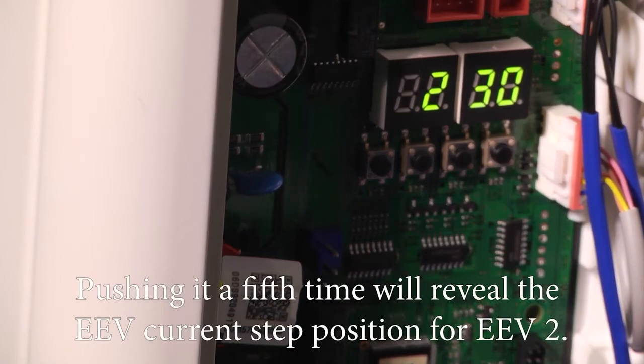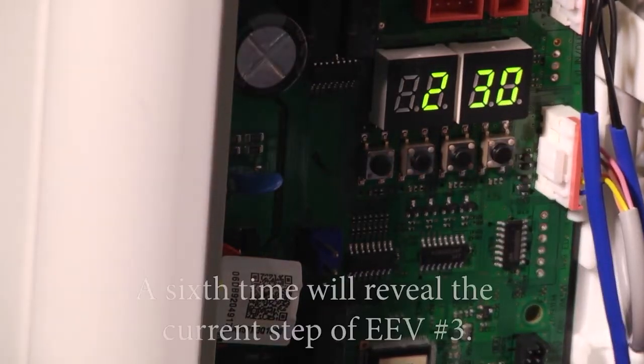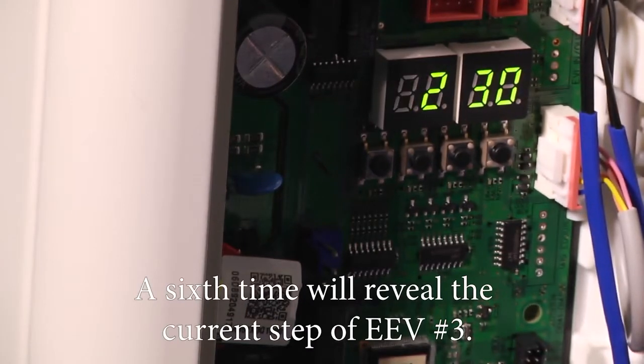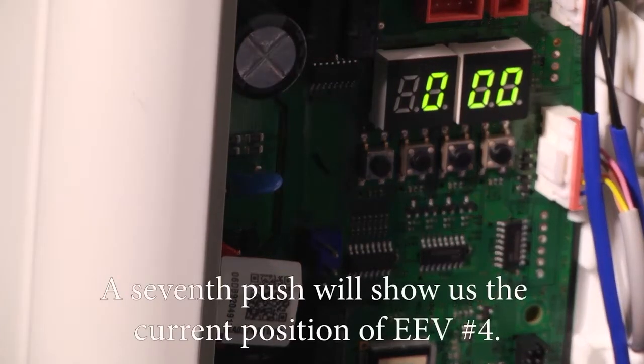Pushing it a fifth time will reveal the EEV current step position for EEV 2. A sixth time will reveal the current step of EEV number 3, and a seventh push will show us the current position of EEV number 4.